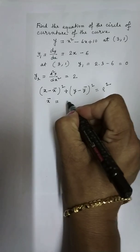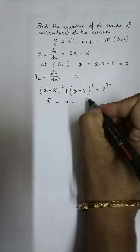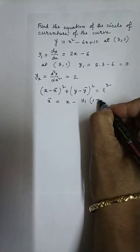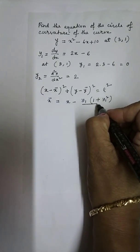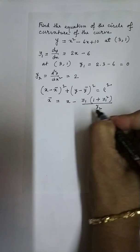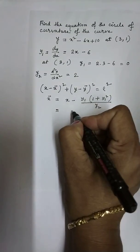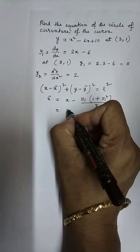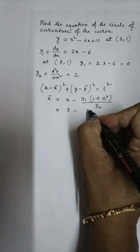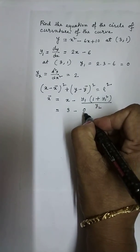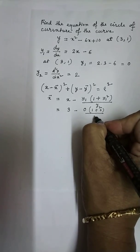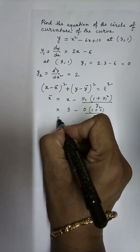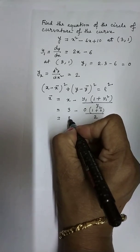The formula is x minus y1 times (1 + y1²)/y2. So that is x equals 3, minus y1 is 0, and (1 + 0)/2. So this is 3 only.